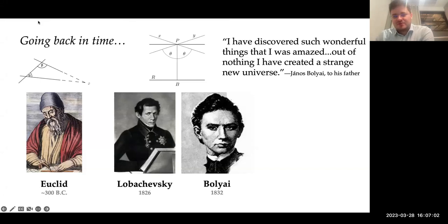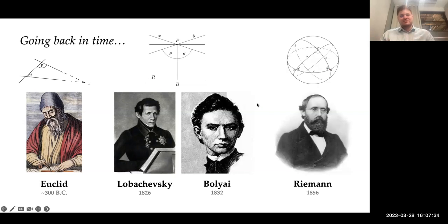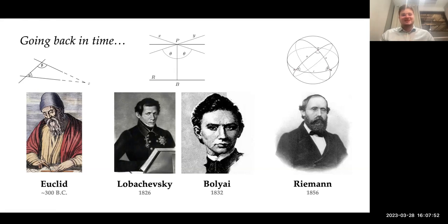The first such result came through the work of Lobachevsky and Bolyai, who discovered what we now know as hyperbolic geometry — a world in which you can draw more than one line parallel to a given line. Bolyai famously wrote to his father saying he had discovered such wonderful things that he was amazed; out of nothing, he had created a strange new universe. The picture grew more complicated with follow-up work by Riemann, who derived elliptic geometry, where no parallel lines exist whatsoever — all lines must cross. The 1800s were a very exciting time to be studying geometry.